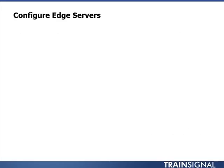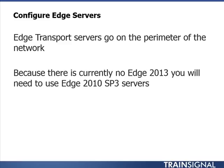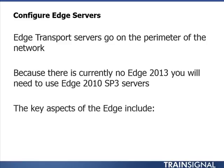When it comes to configuring edge servers, in this case we don't necessarily have one to worry about. But edge transport servers go on the perimeter of the network — typically in a demilitarized zone, a DMZ — where you have a firewall on one side and a firewall on the other. Between the internet and the edge server there's a firewall, and between the edge server and the internal Active Directory organization with your internal Exchange servers, there's another firewall. Because there is currently no Exchange Edge 2013, you would use the Exchange 2010 server running Service Pack 3.